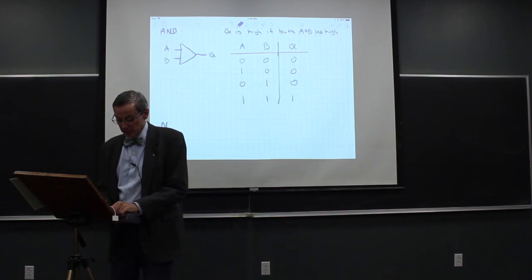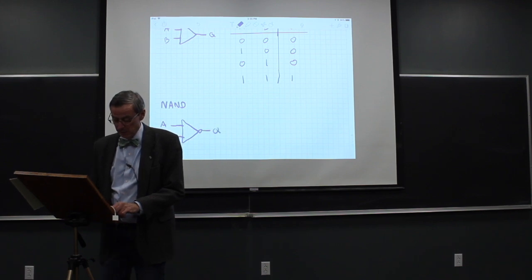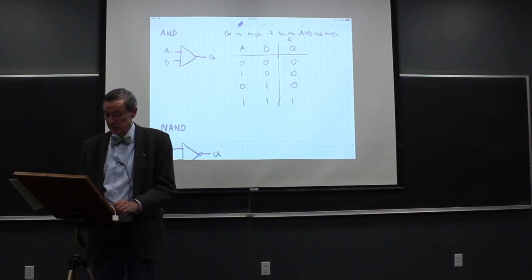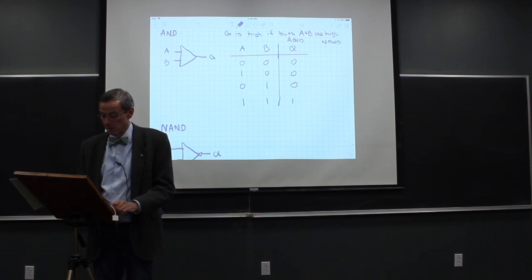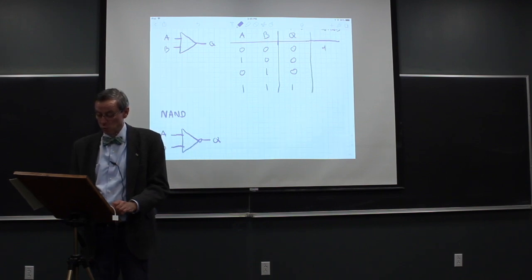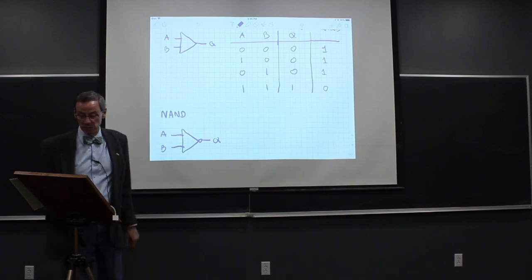Related to the AND is the NOT AND, or NAND. Its symbol is the AND symbol with a bubble on the output. The NAND output is simply the complement of the AND output, so the truth table gives: one, one, one, zero. The NOT AND gives a different output than the AND.